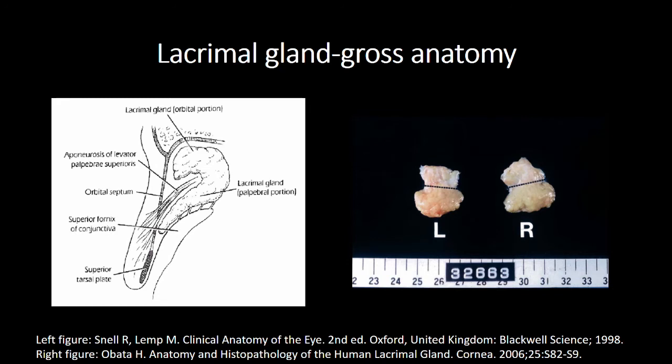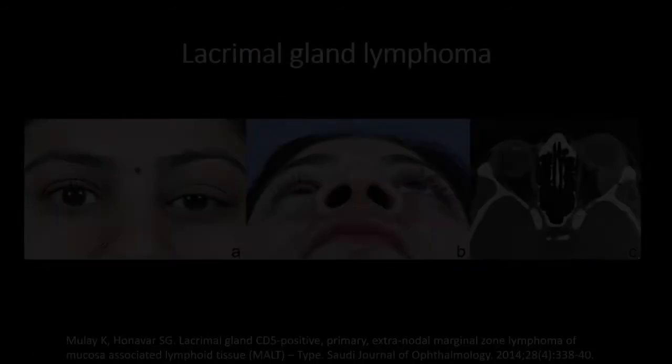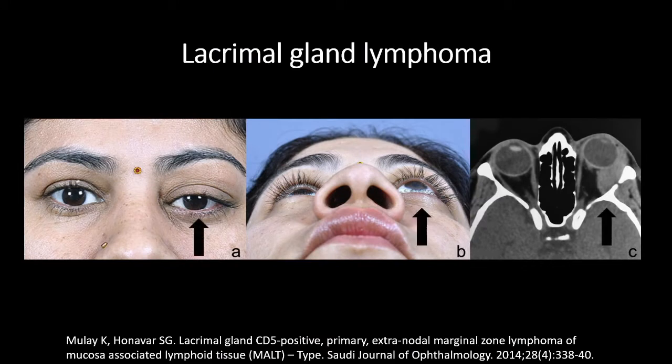Overall, the glands measure 20 by 25mm. They are generally symmetrical between sides, but vary in size between person to person. Asymmetry can be an important clue of pathology, as we can see in these clinical and CT images of a patient with lacrimal gland lymphoma.